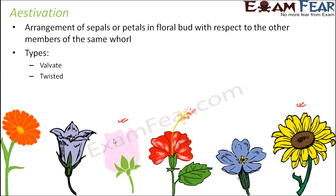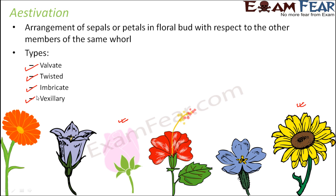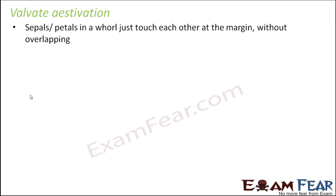Now there are four types of estivation which we will discuss here: valvate estivation, twisted estivation, imbricate estivation, and vexillary estivation. So let us start with valvate estivation.